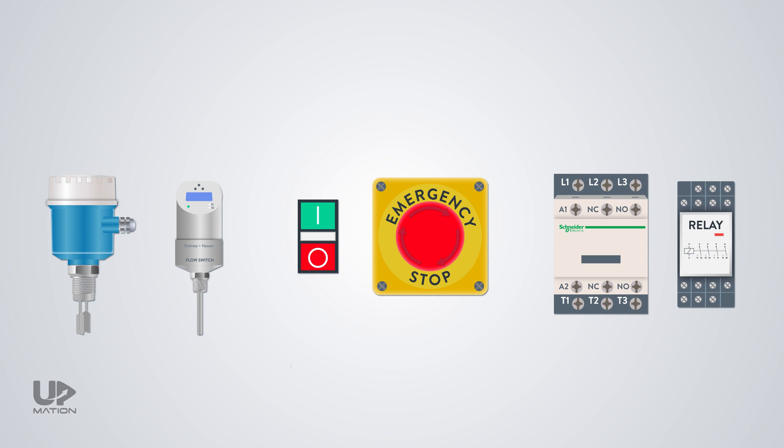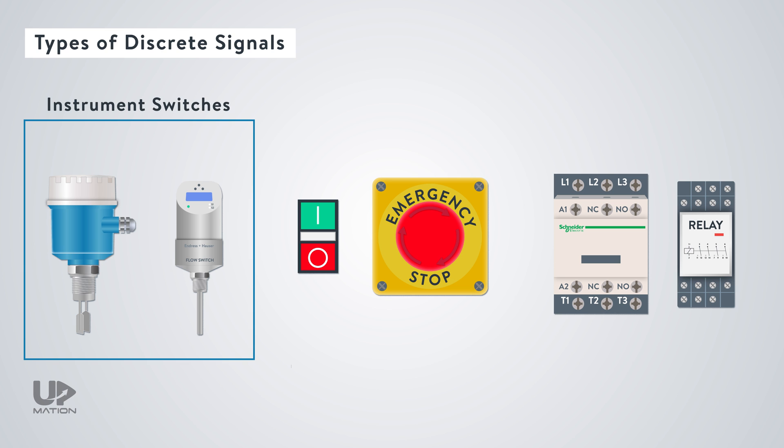Generally speaking, there are three types of digital or discrete signals in the industry. First, the instrument switches, like level switches, flow switches and so on.